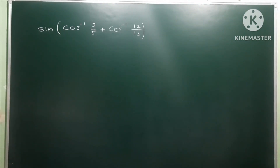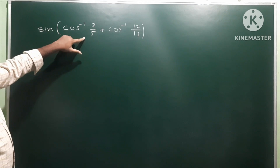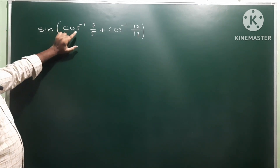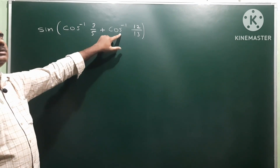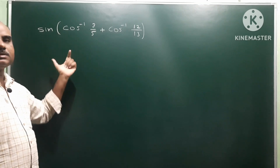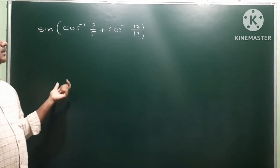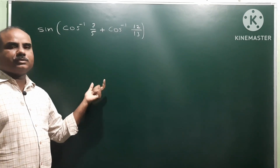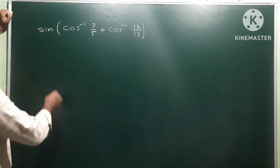Next question: sine of cos inverse 3 by 5 plus cos inverse 12 by 13. We take the first function as a and second function as b, then we have sine of a plus b, that means sine a cos b plus cos a sine b. We want to find sine a, cos b, cos a, sine b values and then substitute to get the answer.